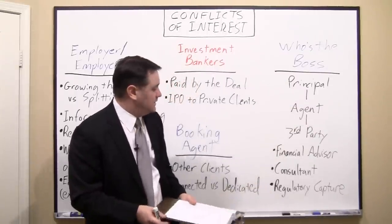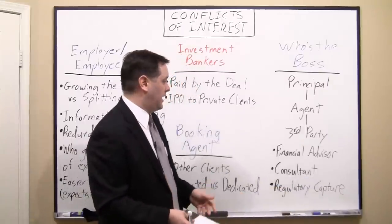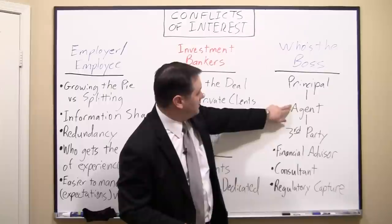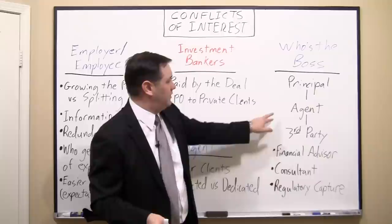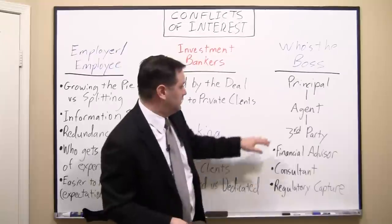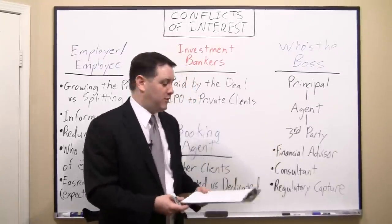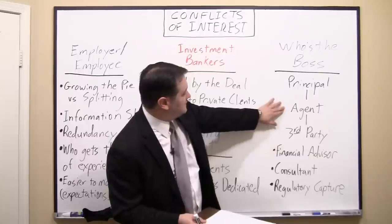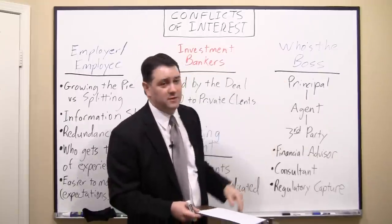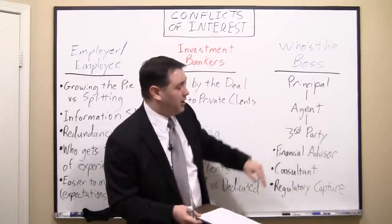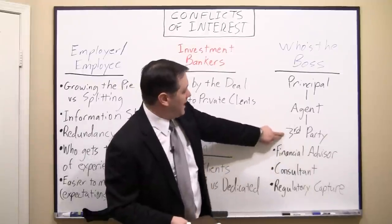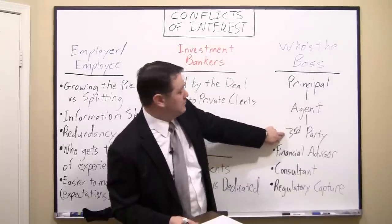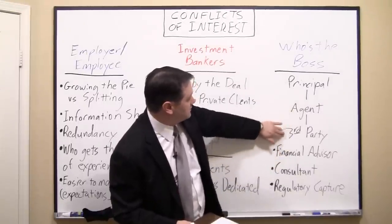The last example is what I call regulatory capture. The government — as our principal, theoretically representing the people — hires a regulator, an agency like the Department of Commerce or the EPA, to go out and regulate some industry, like oil and gas. But the regulators quickly realize the public, and often even the politicians as their proxy, don't understand much about the industry. The third parties — the oil and gas companies — understand it really well. So the regulators become captive to those companies. These companies take them out to fancy dinners and golf trips, and it's very hard to get the regulators to act differently because the industry knows all the tricks while the regulators don't.